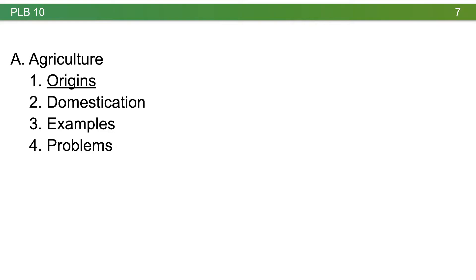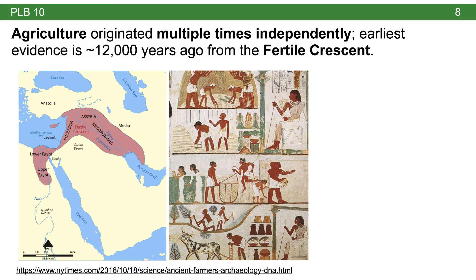Let's apply the plant biology we've learned and start thinking about aspects that affect plants and people. One of the first and most important is agriculture. The best evidence suggests agriculture originated in the area known as the Fertile Crescent, which includes modern countries like Syria, Israel, Lebanon, Jordan, a little bit of Egypt, and Iraq — shown on the map on the far left.